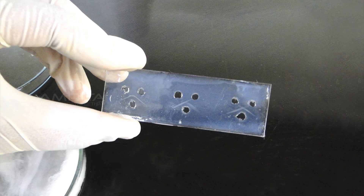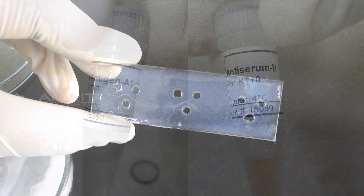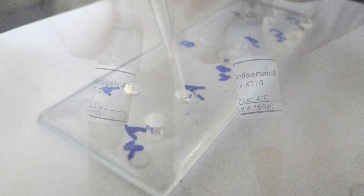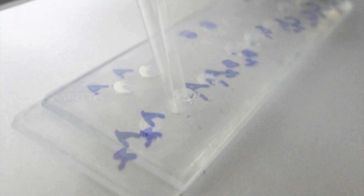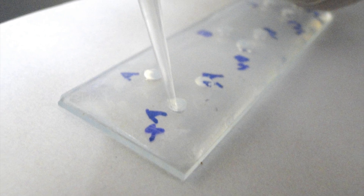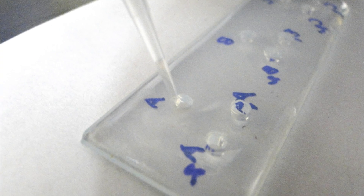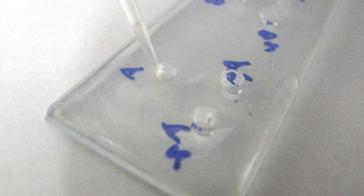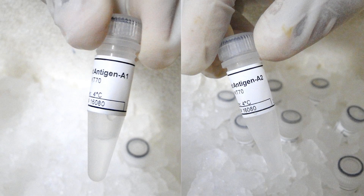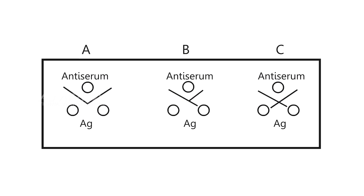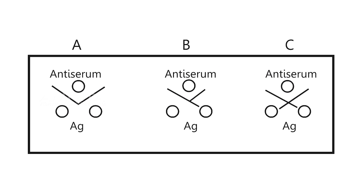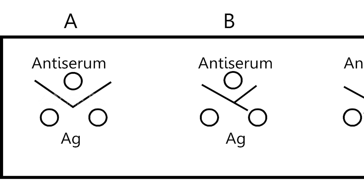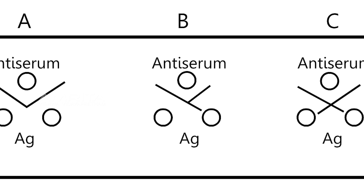In Ouchterlony Double Diffusion, both antigen and antibody are allowed to diffuse into the gel. Antigens from different species are loaded into two wells and the known antibody is loaded in a third well located between and slightly below the antigen wells to form a triangle. Depending on the similarity between the antigens, different geometrical patterns are produced between the antigen and antiserum wells. The patterns of lines that form can be interpreted to determine whether the antigens are the same or different.